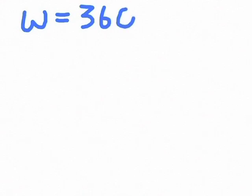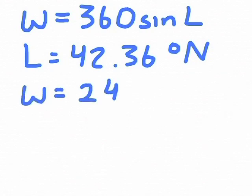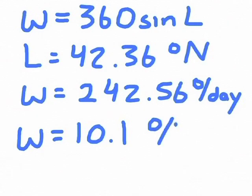There's a simple formula that lets us find the angular velocity of our pendulum, represented by omega, in degrees per day. Omega is equal to 360 times the sine of the latitude. Here in Boston, our latitude is 42.36 degrees north. So, this gives us an angular velocity of 242.56 degrees per day. This tells us that our pendulum will precess 10.1 degrees every hour.